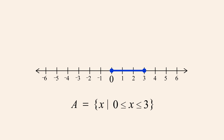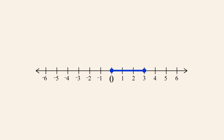The endpoints of an interval don't necessarily have to be included in the interval. However, since set A contains numbers greater than or equal to zero and less than or equal to three, the endpoints zero and three are included in this interval. Intervals which include their endpoints are called closed intervals. Intervals which do not include their endpoints are called open intervals. The endpoints of open intervals are drawn as open circles, indicating that they are not members of the set.